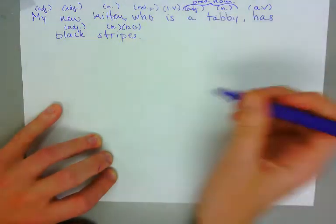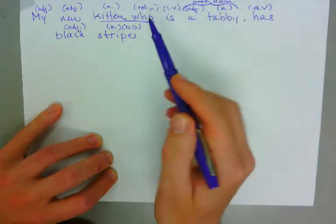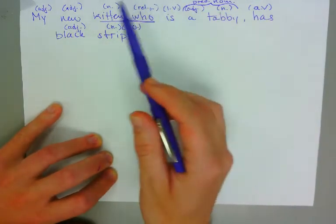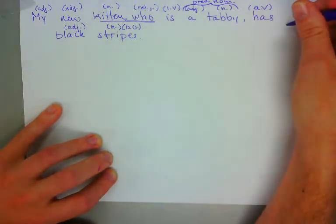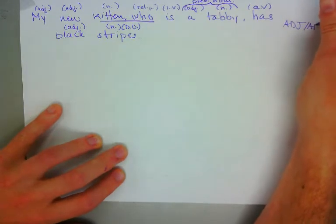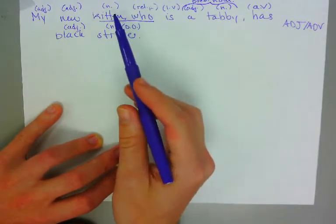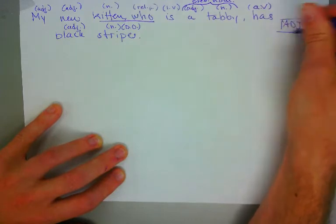Here's the important part. The relative pronoun that begins this subordinate clause is preceded by a noun. When this situation occurs, we know we're talking about an adjective or an adverbial clause, because adjectives modify nouns. Here's the noun, and this clause is modifying it. Ergo, we're talking about an adjective clause.